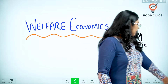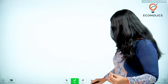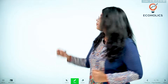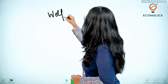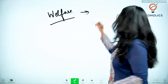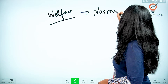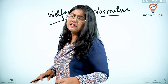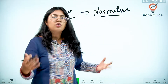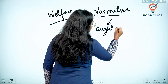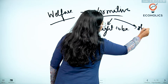Firstly, there are a few economists who have greatly influenced the welfare approach. The welfare approach is called a normative approach — it comes under normative science. Normative science basically means what should be done, what ought to be done — what should be.